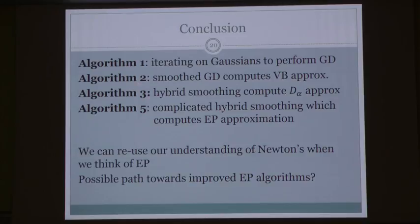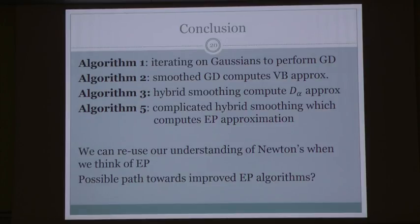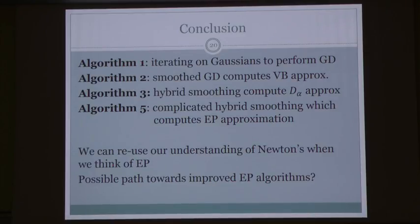Let me recap. I presented a sequence of algorithms, each a variant of the other. Algorithm 1: gradient descent / Newton's method. Algorithm 2: added smoothing with a Gaussian, computing the variational Bayes Gaussian approximation. Algorithm 3: smoothing with a hybrid instead of a Gaussian, minimizing the alpha divergence. Algorithm 5: splitting the landscape into multiple components with different smoothings, computing the EP approximation. All intuitions about Newton's method and gradient descent can be reused when thinking about EP.